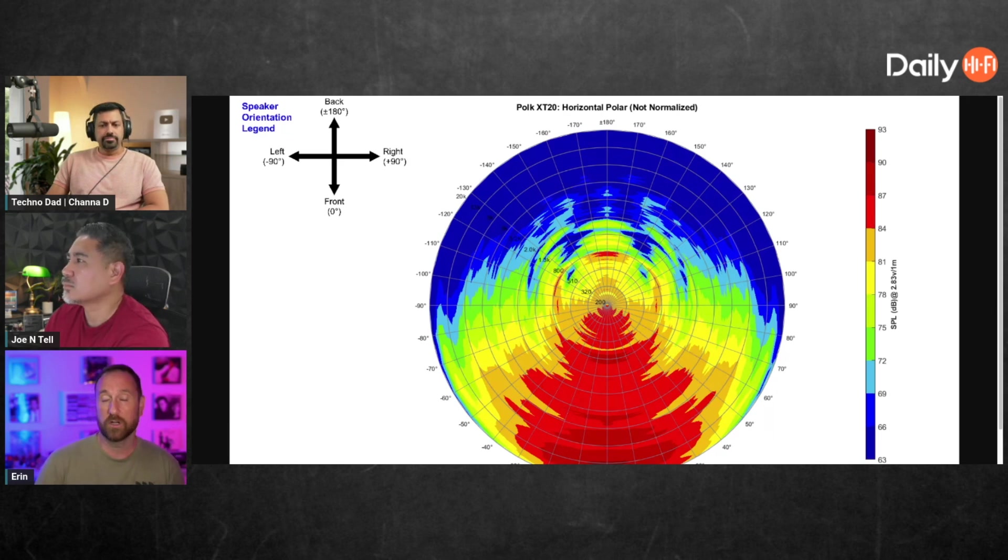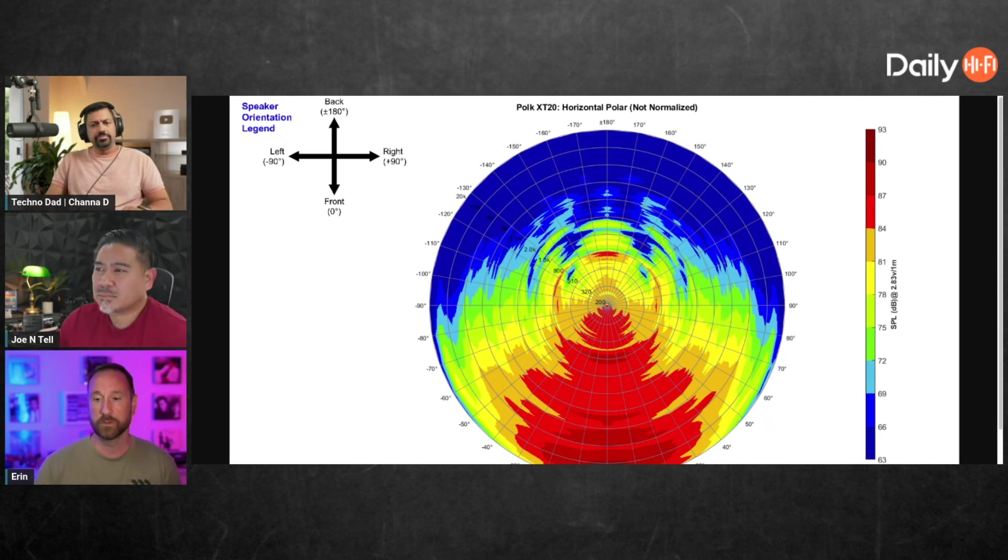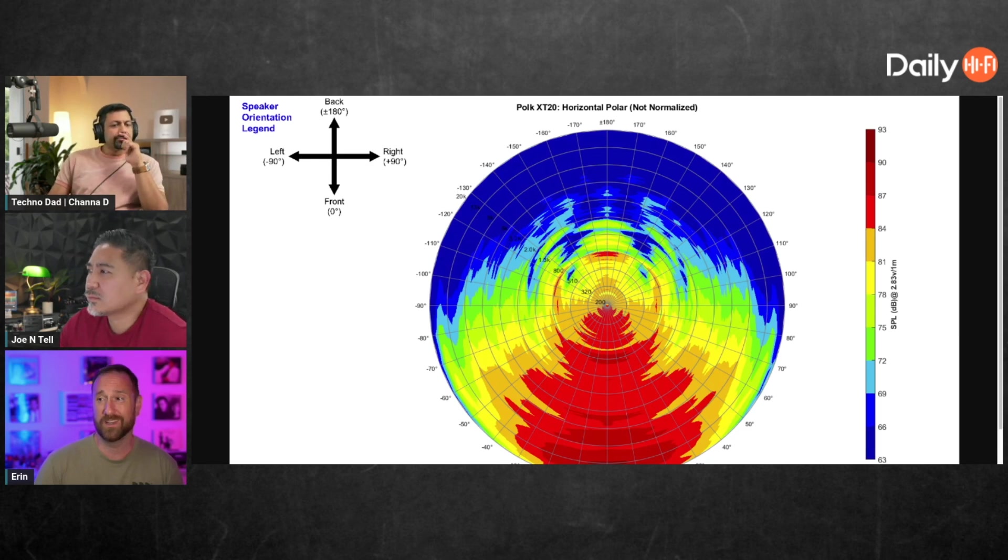And then you could also do an impedance sweep where you measure it with and without the port sealed or not. And a quick impedance sweep will usually show a resonance going away. I mean, that takes like seconds and you can use that with a DATS - it costs like $130 bucks. DATS isn't the best tool in the world for anybody who's wanting to play around with.